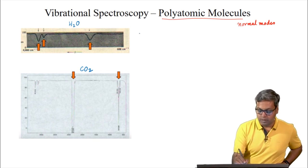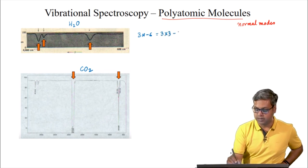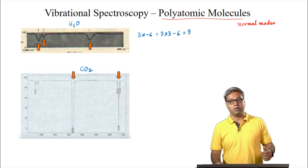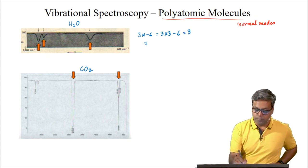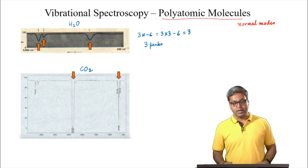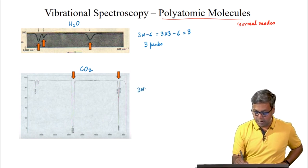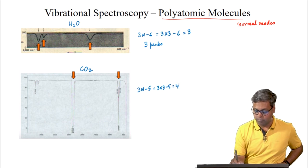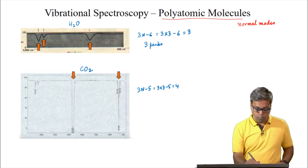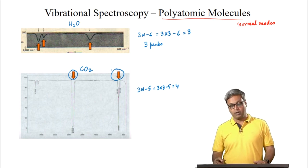Water has 3n-6, that is 3 times 3 minus 6, that is 3 vibrations because water is nonlinear, and also 3 peaks are observed in the IR spectrum. For carbon dioxide, because it is linear, there are 3n-5, that means 3 times 3 minus 5, that is 4 vibrations. However, only 2 peaks are observed in the IR spectrum.